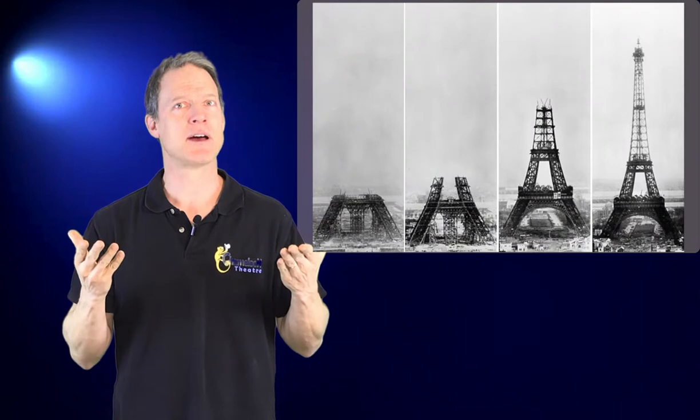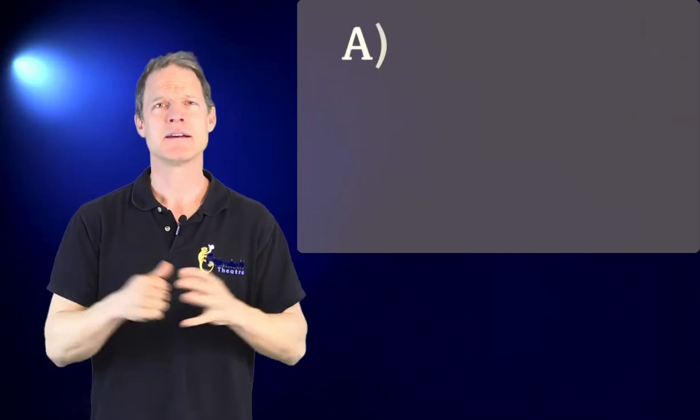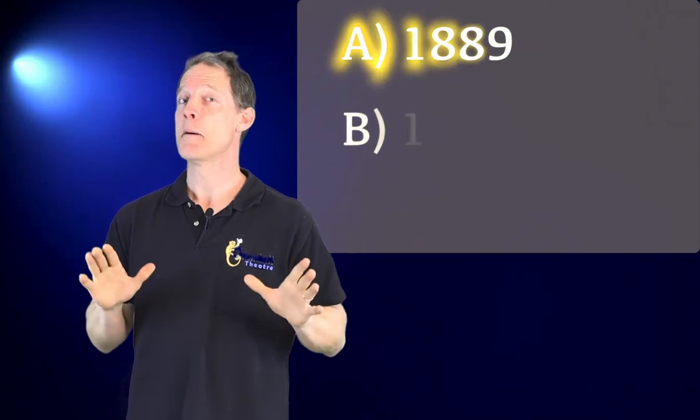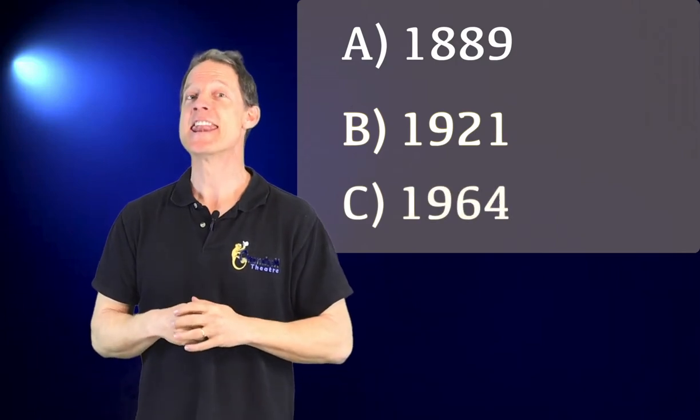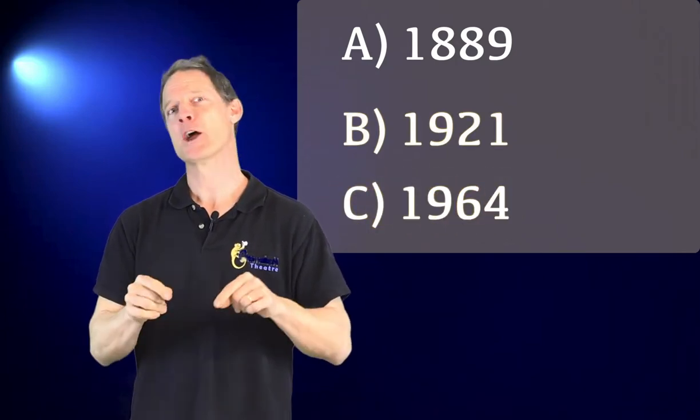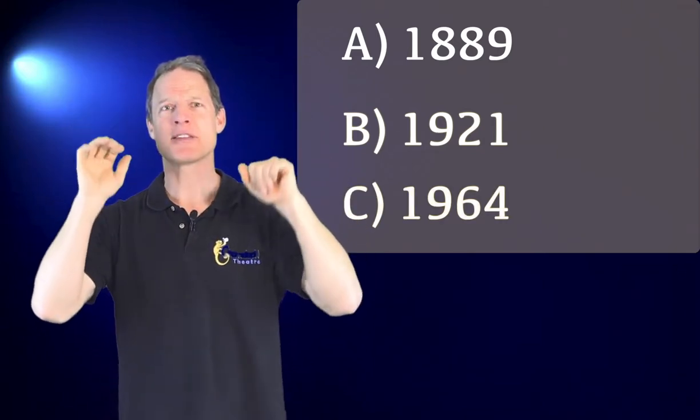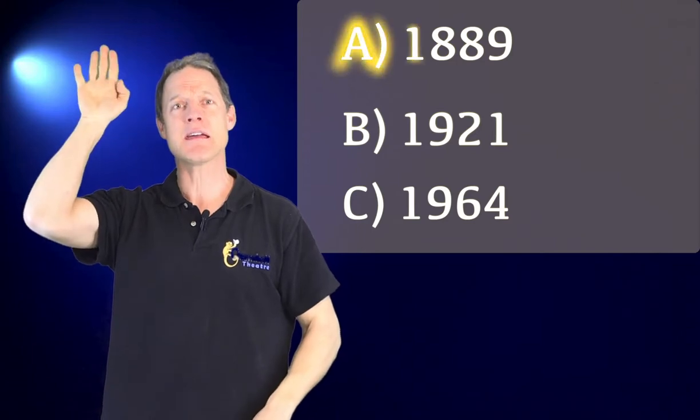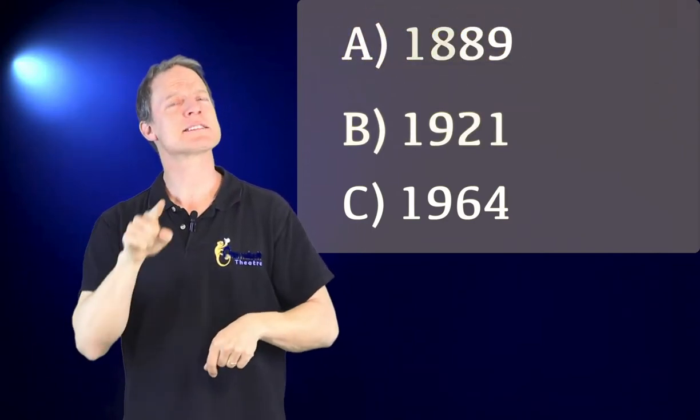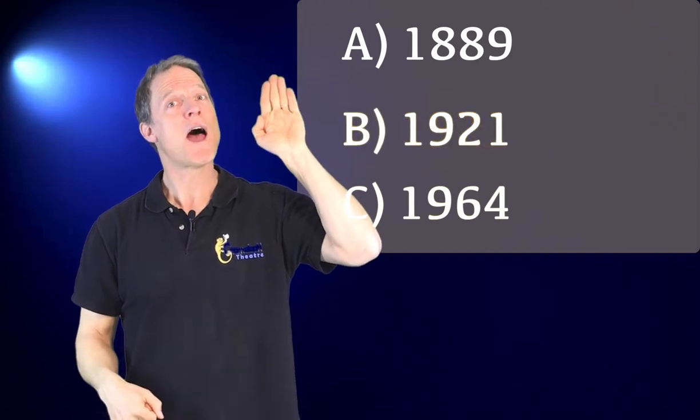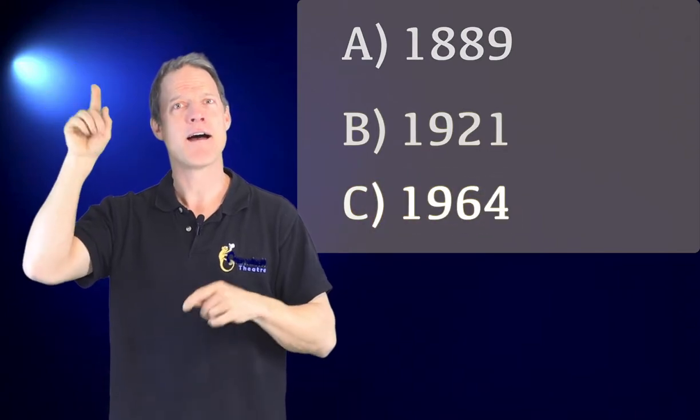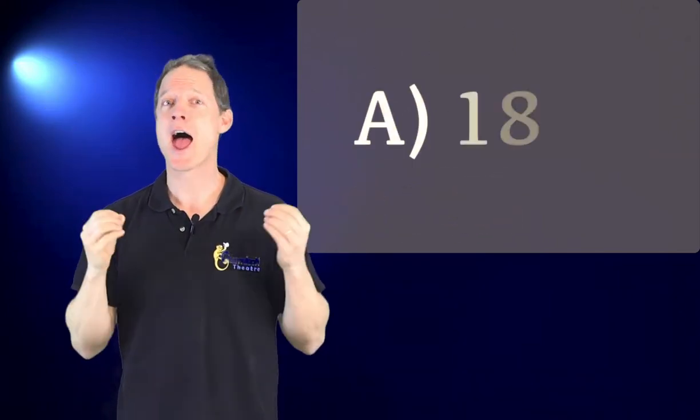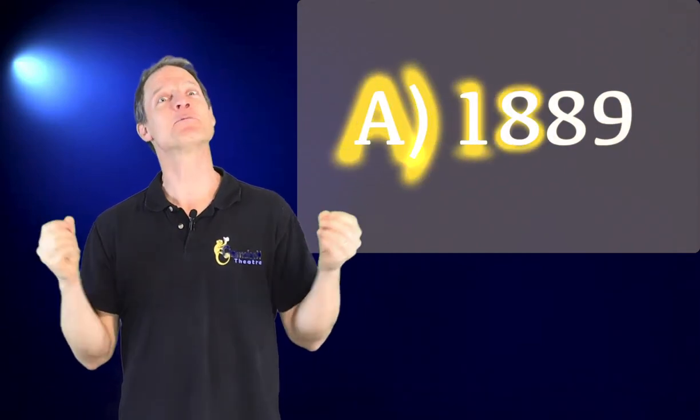The first question is: when was the Eiffel Tower built? A) 1889, B) 1921, or C) 1964. I want you to raise your hand if you think it's the different ones. So raise your hand if you think it was A. Let's see all the people who think it's B. And let's see all the people who think it was C.